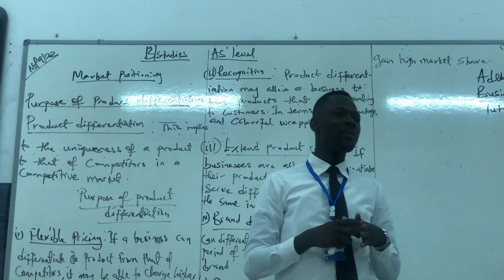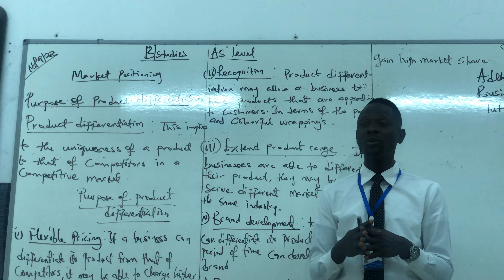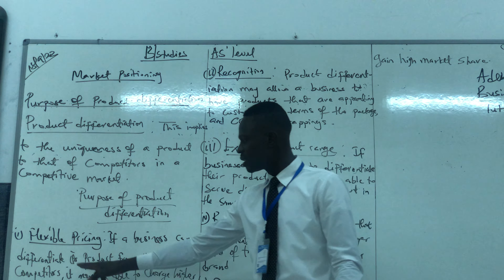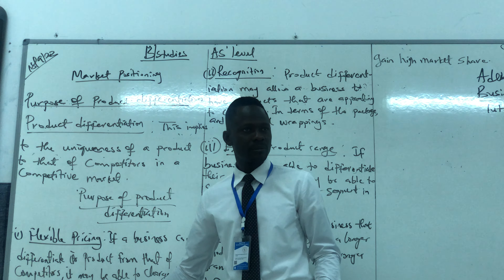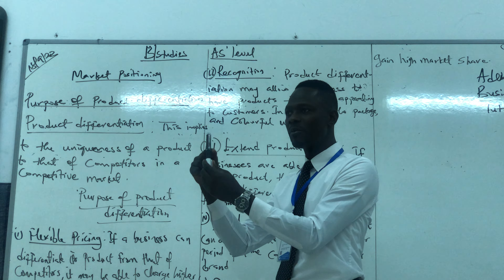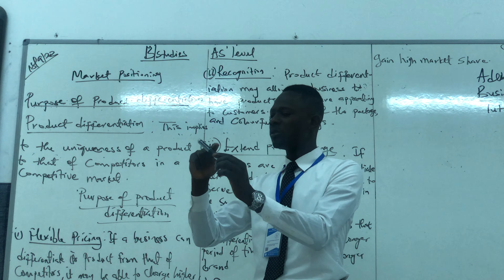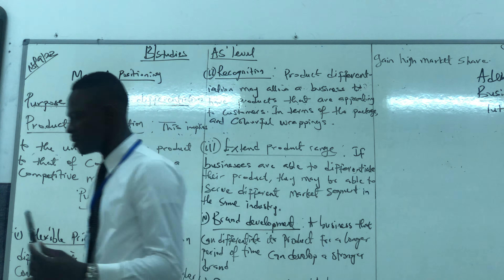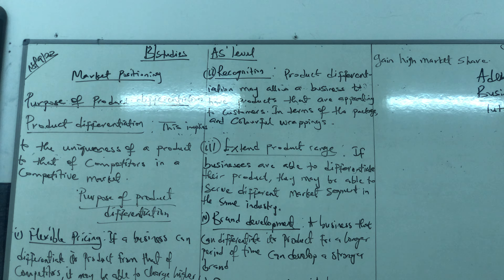The purpose of product differentiation — why do we have to differentiate our product from those of competitors? Number one: flexible price. When you are able to successfully differentiate your product from that of competitors, you could charge a higher price because your product looks unique — it's not like other products. And when you are able to charge a higher price, your revenue leads to an increase in your profit. A company might try to differentiate its product so it can increase its revenue through flexible, higher pricing.